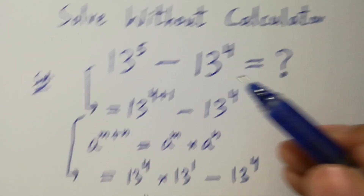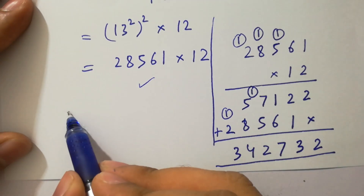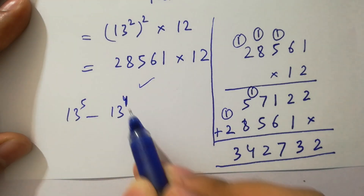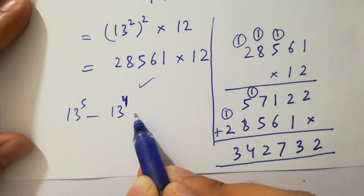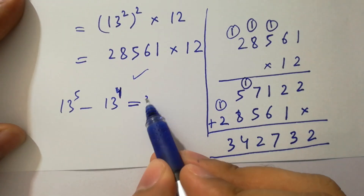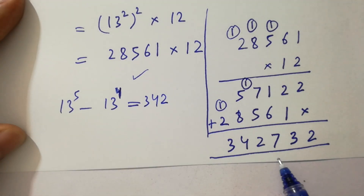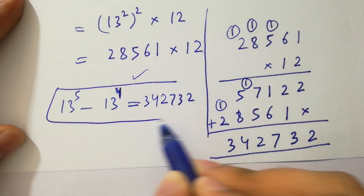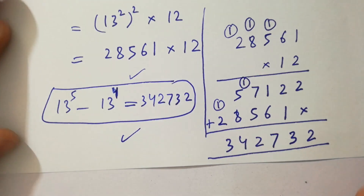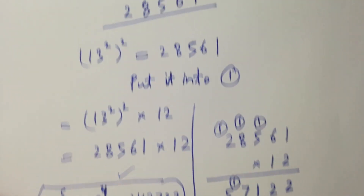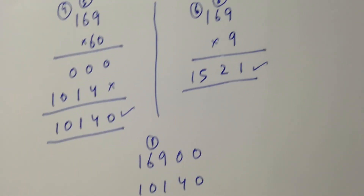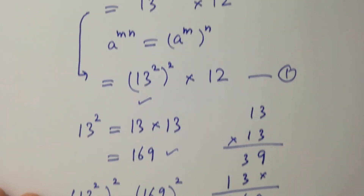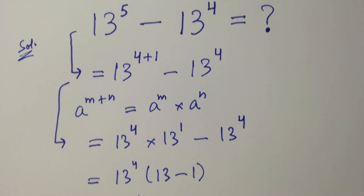13 to the power 5 minus 13 to the power 4 is equal to 342732. Thanks for watching this video. Please subscribe to this channel to get notifications of my new videos, and don't forget to share these videos with your classmates and friends so that they also benefit from it. Okay, bye.